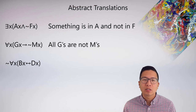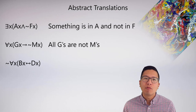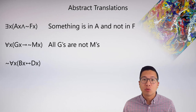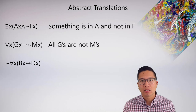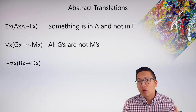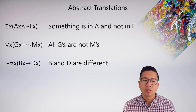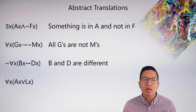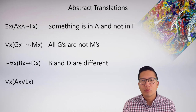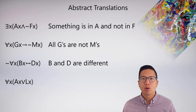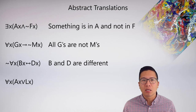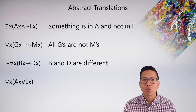For 'negation for all x, bx biconditional dx': if you think about how the negation should work, it should mean the opposite. We know 'for all x, bx biconditional dx' means b and d are the same, so with a negation in front it just means b and d are different. You can have odd forms of logical symbols that don't follow canonical form when symbolizing, but we know enough about the meanings to still generate nice abstract translations of them.